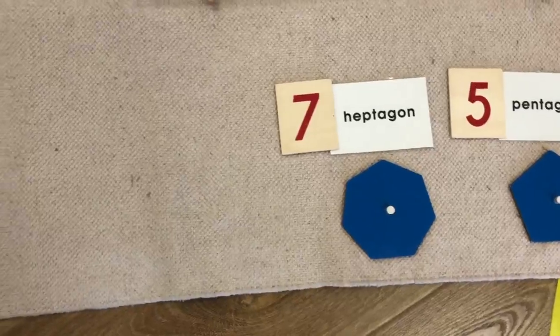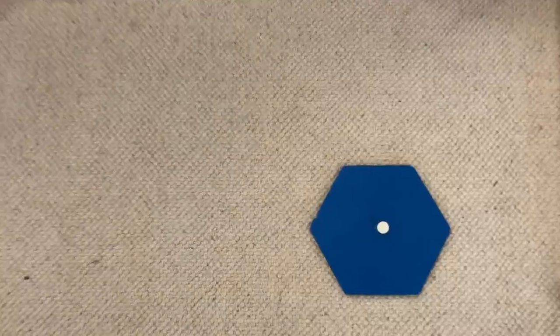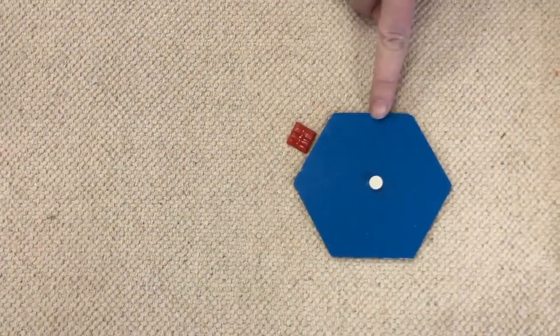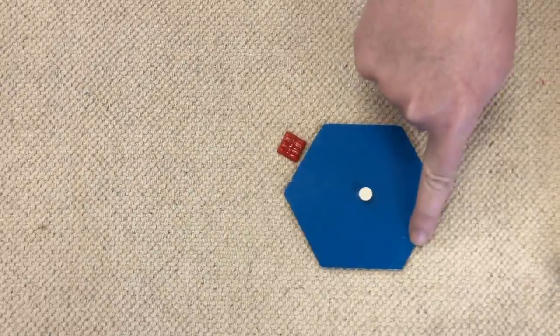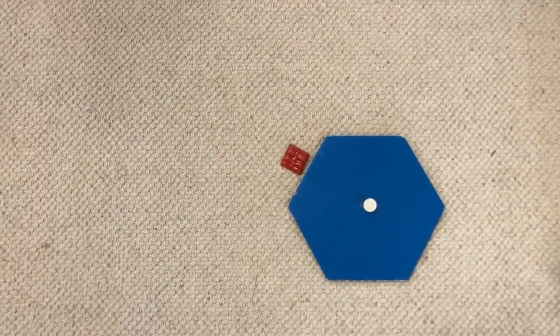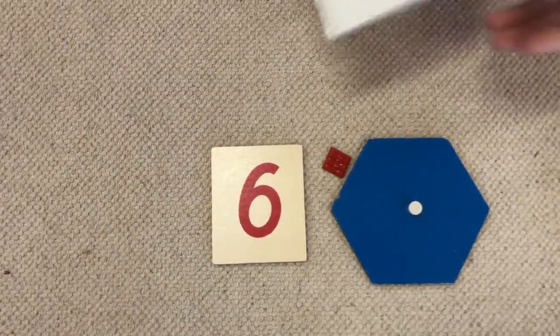And we're going to look at a different polygon. One, two, three, four, five, six. A six-sided polygon is called a hexagon.